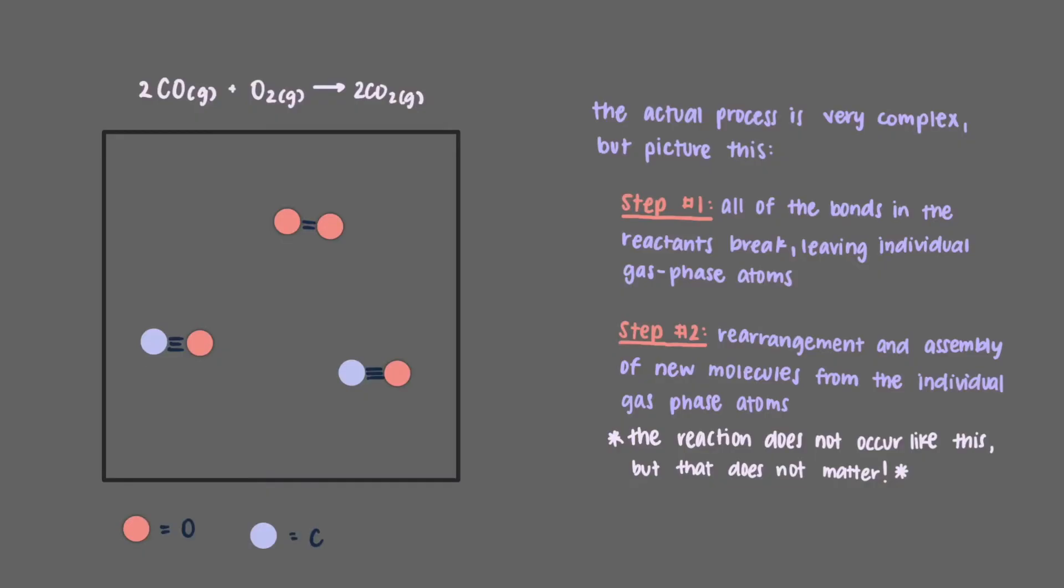The reaction does not take place in this manner, but that doesn't matter if all we want to do is compute the delta H of the reaction. Since enthalpy is a state function, we can propose any crazy pathway we want and the delta H for the reaction will be the same as the actual microscopic process.